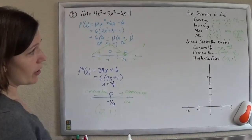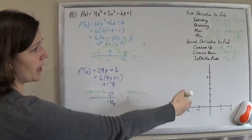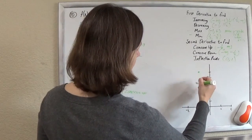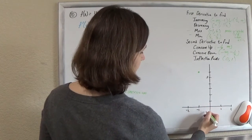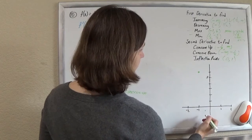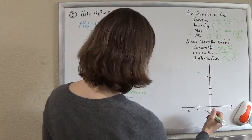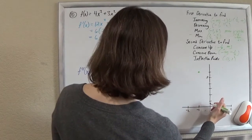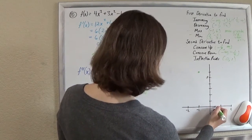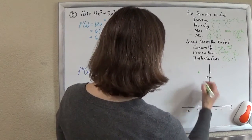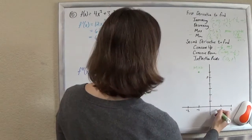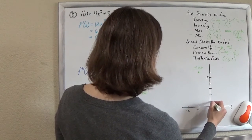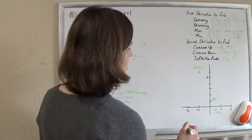So now we know all this stuff about our graph. We can use it to kind of draw it. So we'll just plot what we've got. I like to plot my max and my min. So I've got a max at negative 1, 6. A min at 1/2, negative 3/4. And an inflection point at, let's see, zero, one. Oops. Why did I plot that there? 1/2, positive 1/2, negative 3/4. That's better. So this is my max at negative 1, 6. This is my min at 1/2, negative 3/4. And then my inflection point is (0, 1).